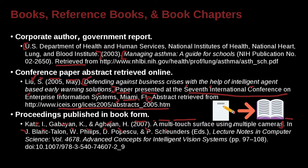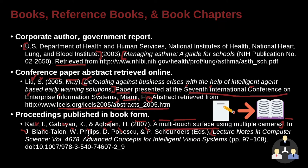Then comes the name of the actual conference or book. 'Lecture Notes in Computer Science, Volume 4678: Advanced Concepts for Intelligent Systems.' So this is part of a larger book, and the larger book is called 'Advanced Concepts in Intelligent Systems.' We have the smaller piece, then the larger piece, then the page number, and then we have a DOI.